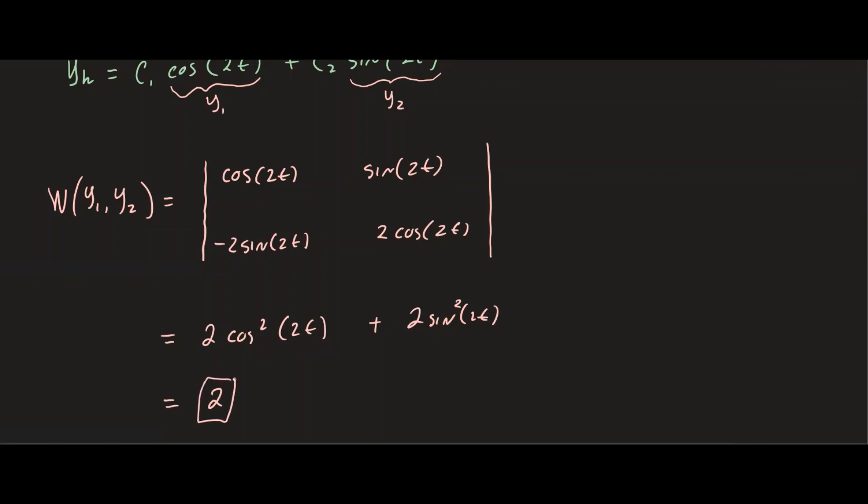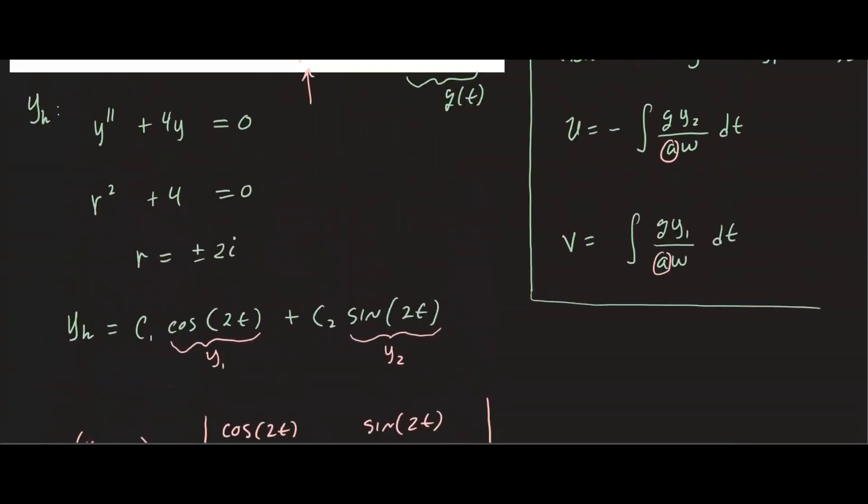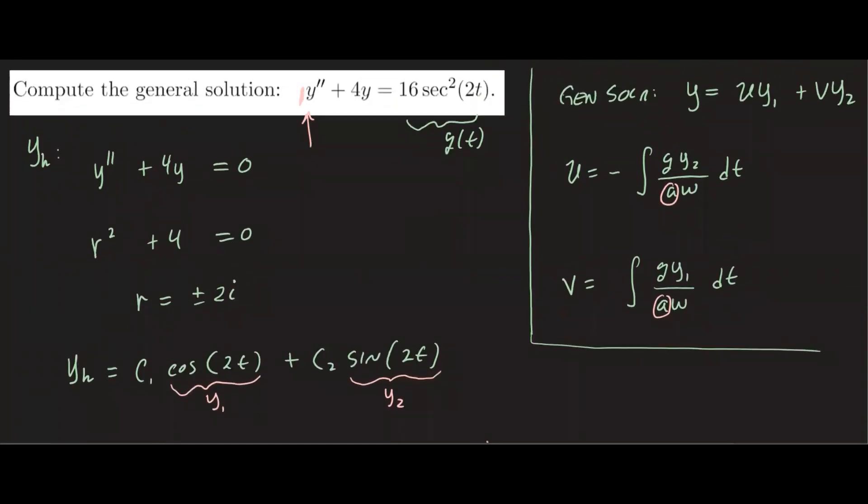Alright, so we have the Wronskian, we have y1 and y2. Now we're ready to use these formulas to figure out u and v. Once we have them, we plug it into our general solution right here. So let's go ahead and do that.